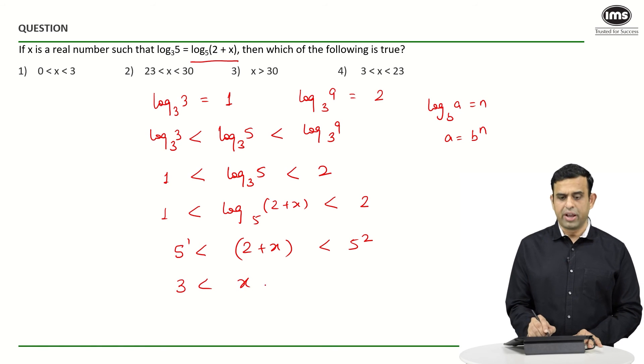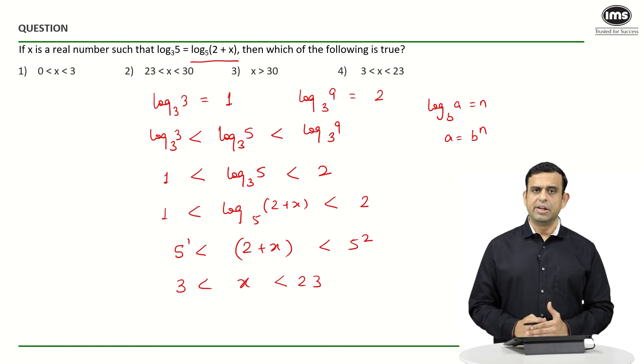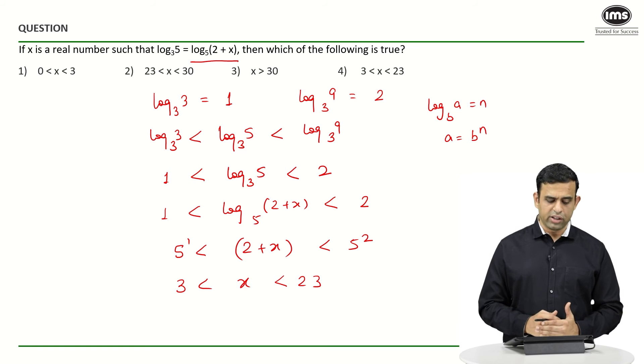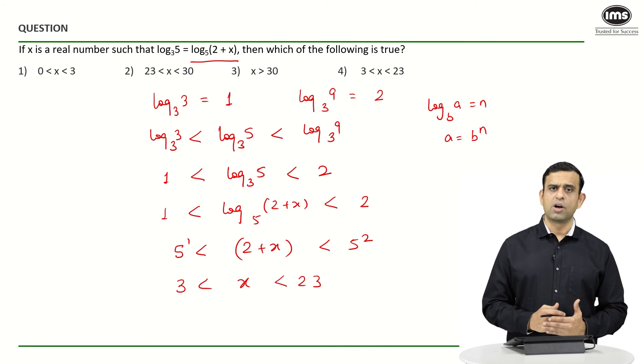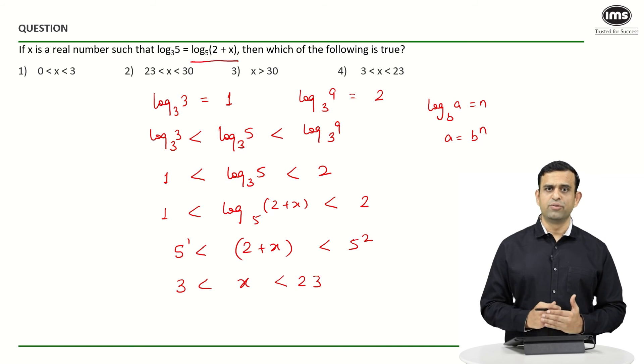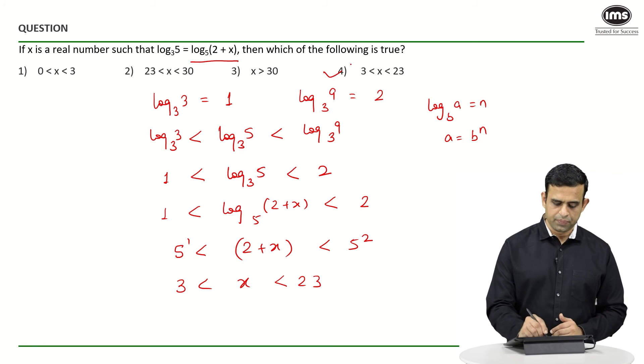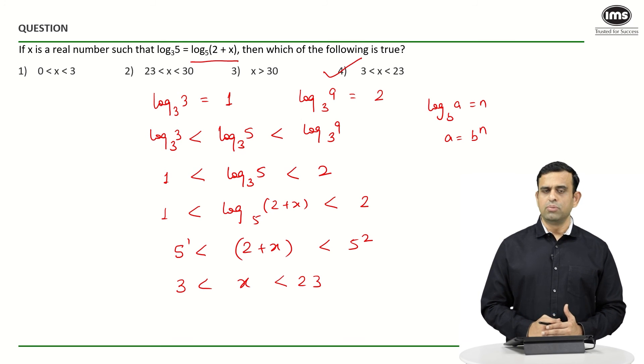And then if I look at the option choices, I can clearly mark option number 4 as my answer for this particular question. So a nice problem, and now once you have understood this particular method, you can give a try to the replica question and put your answer in the comment section.